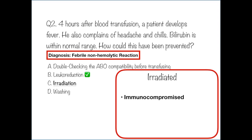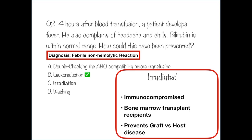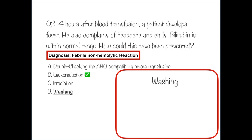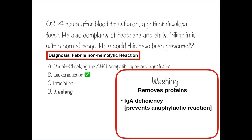Blood is irradiated before transfusing it to people who have cellular immune deficiencies or are bone marrow transplant recipients, to prevent graft-versus-host disease. Washed blood removes proteins like anti-IgA antibodies, so it is preferred for patients with IgA deficiency.